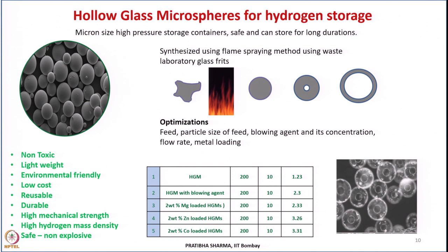Another class of materials that can be used for hydrogen storage includes hollow glass microspheres. We have studied compressed state hydrogen storage where hydrogen is stored in its molecular form inside pressurized vessels. Here, these are very small micron-sized high-pressure containers storing hydrogen in its molecular form such that it is safe to operate, safe to store, and can be carried over longer distances and stored for longer durations.